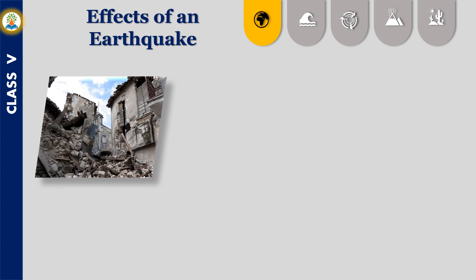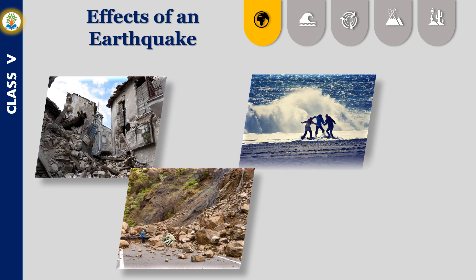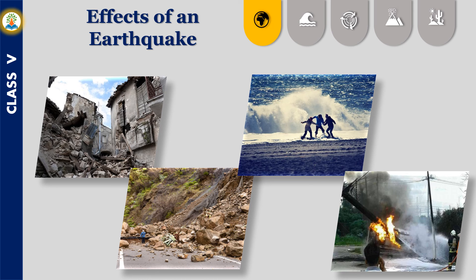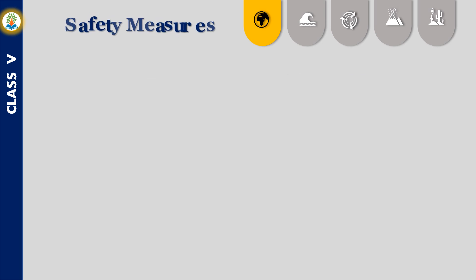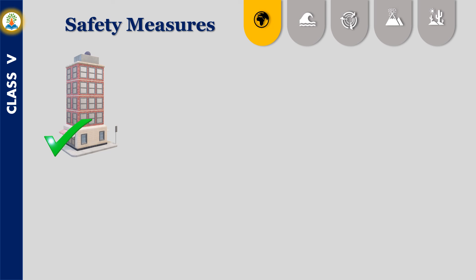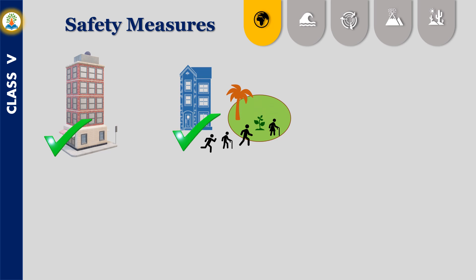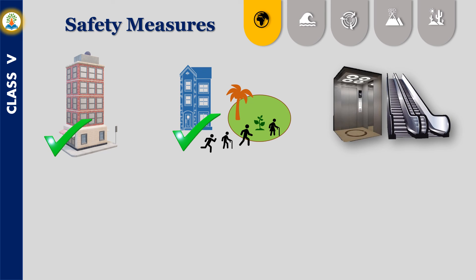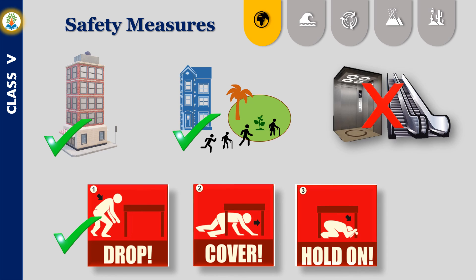Effects of earthquakes include collapsing of buildings and trees resulting in people getting injured or dying, causing landslides in hilly regions, triggering of tsunamis in oceans and lakes, and leading to fire in case of damage to power lines. Buildings should be engineered to be quake-safe. As tremors begin, people should evacuate the building immediately and move to open spaces; one should not use escalators and lifts. If getting out is not possible, follow three simple steps: drop on the ground, cover yourself under a table or solid surface, and hold till the tremors stop.